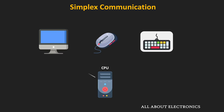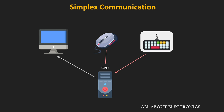Similarly, the communication between the CPU and the display monitor, or between the mouse and the CPU, is also simplex communication. The CPU sends data to the display monitor, which displays the content on screen. Likewise, communication between the keyboard or mouse and the CPU is one-way, because through the keyboard or mouse we are sending data to the CPU.